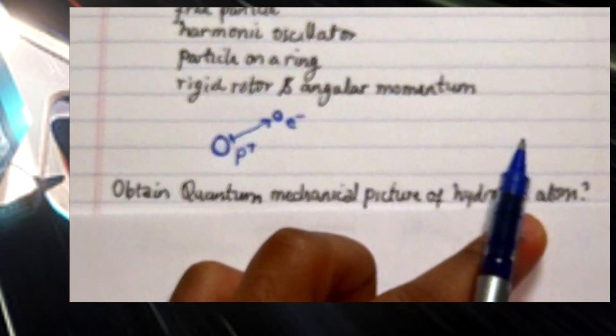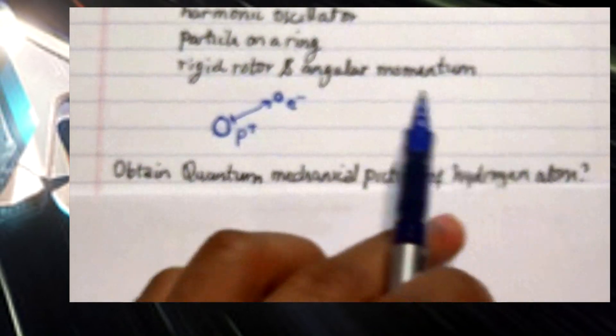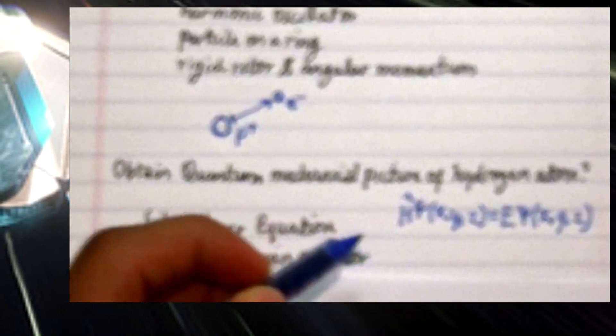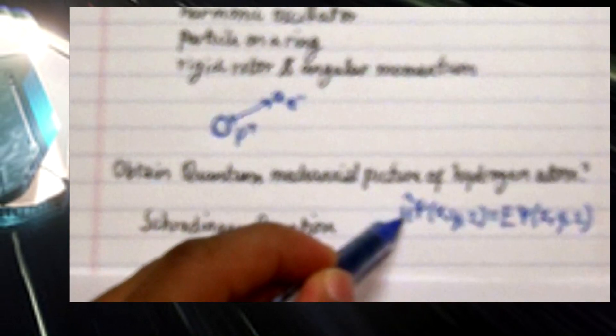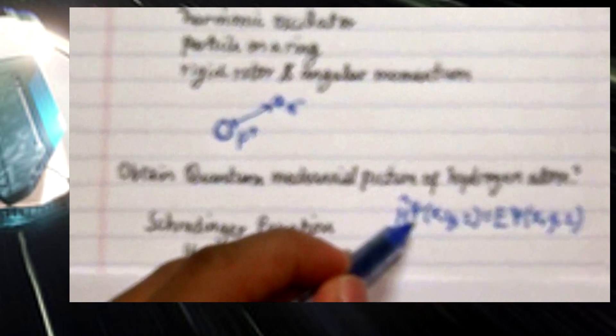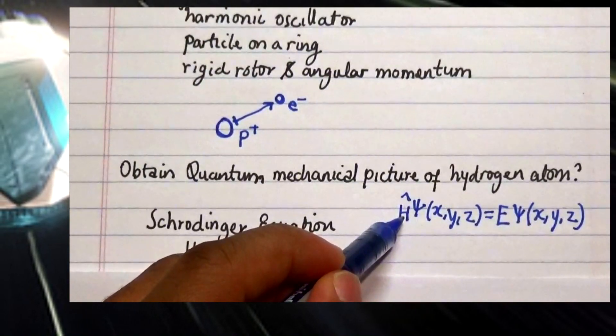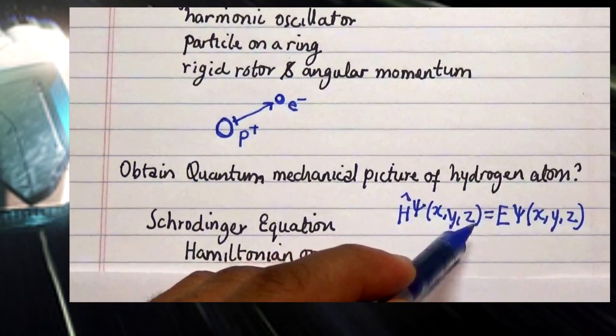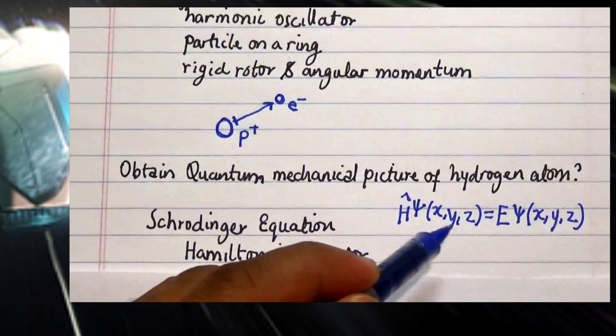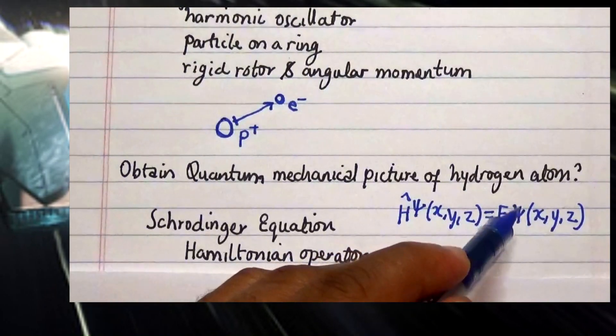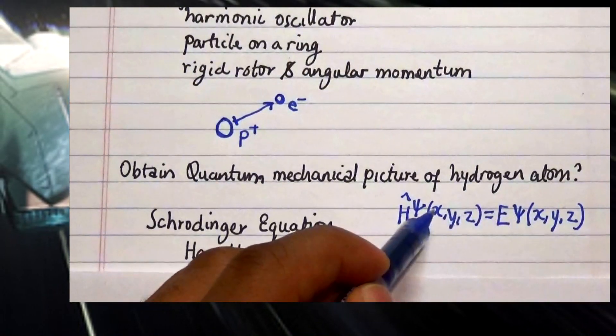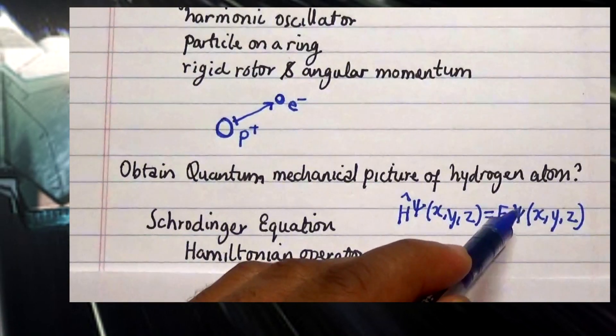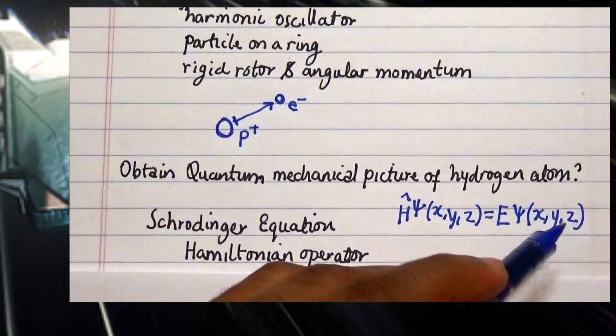The Schrödinger's equation consists of a Hamiltonian operator which is expressed at this particular equation where the Hamiltonian operator is multiplied by the wave function in the x, y, and z coordinates neglecting the time coordinates. This is equal to the energy multiplied by the reproduced eigenfunction which is this wave function in x, y, and z coordinates.